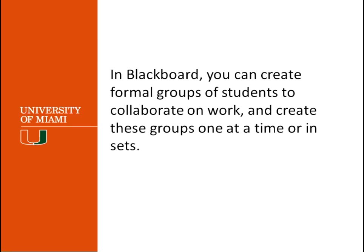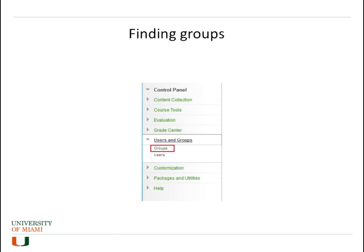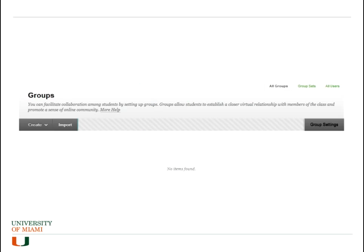In Blackboard you can create formal groups of students to collaborate on work, and create these groups one at a time or in sets. So where do you find your groups? Under the control panel you would go to where it says Users and Groups and click on Groups. This will bring you to the groups page — as you can see this one is empty, but this is what you will see if you don't have anything.